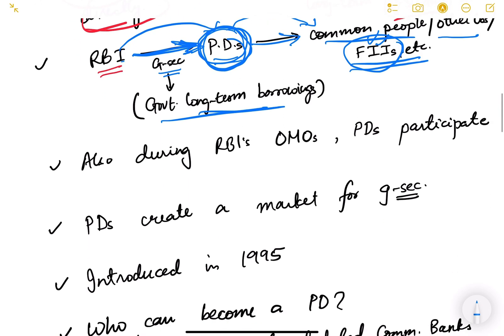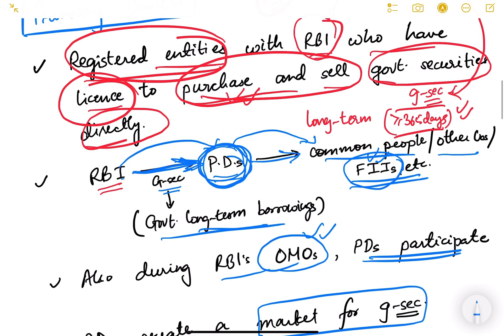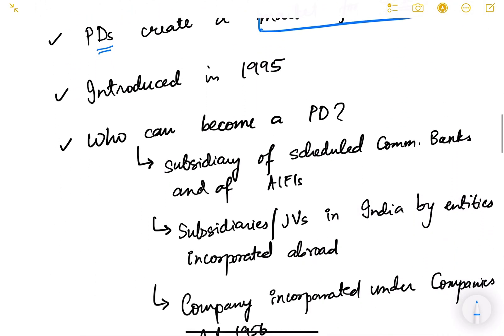Primary dealers also participate during RBI's open market operations, which we have seen in monetary policy. Basically, primary dealers create a market for government securities — they connect common people with the RBI, creating a market where common people demand the securities and RBI sells them. The concept of primary dealer was introduced in 1995.